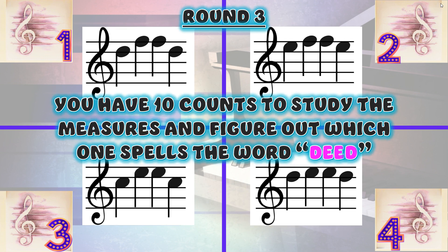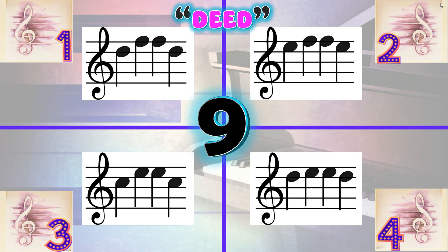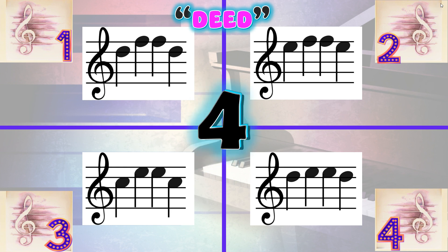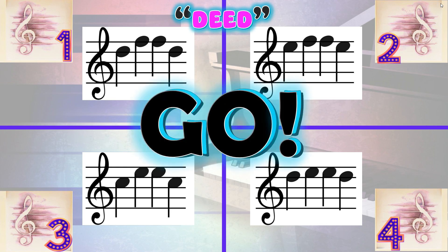Round 3. You have 10 counts to study the measures and figure out which one spells the word 'deed.' Go to the corner of the note pattern you think spells the word.